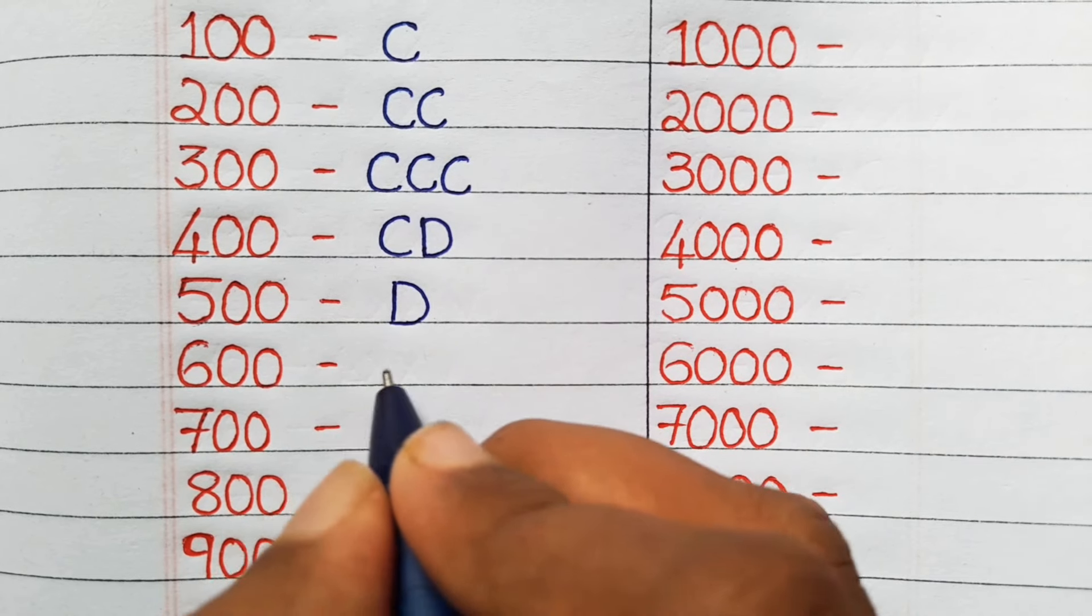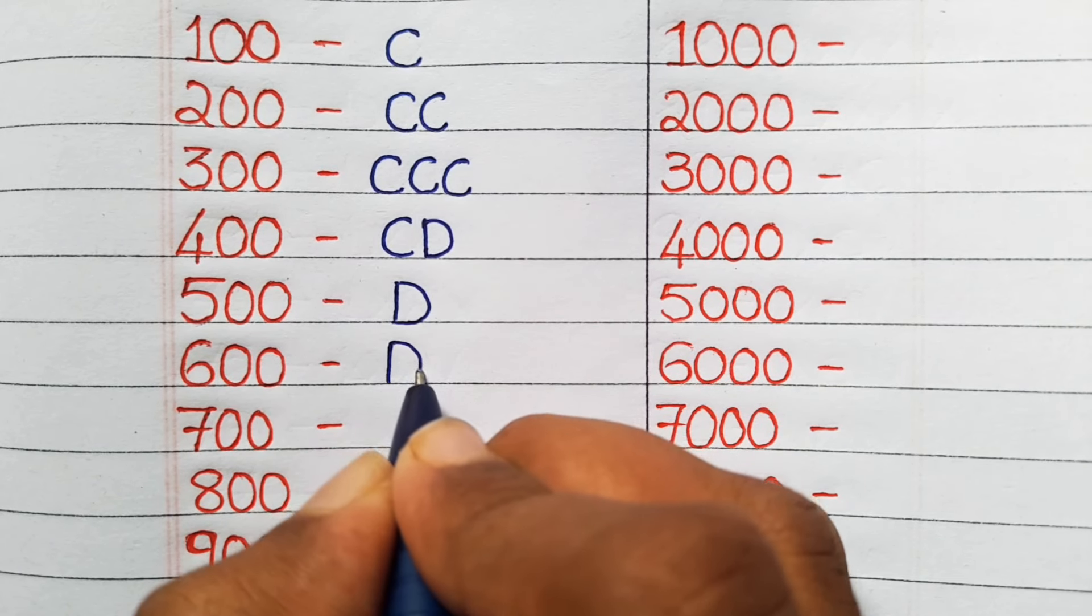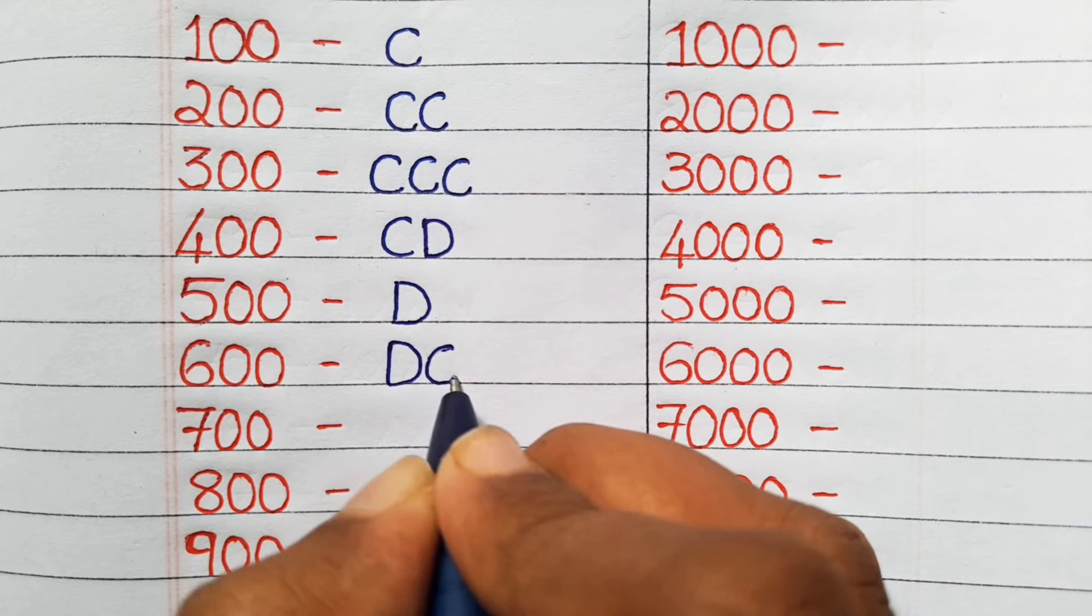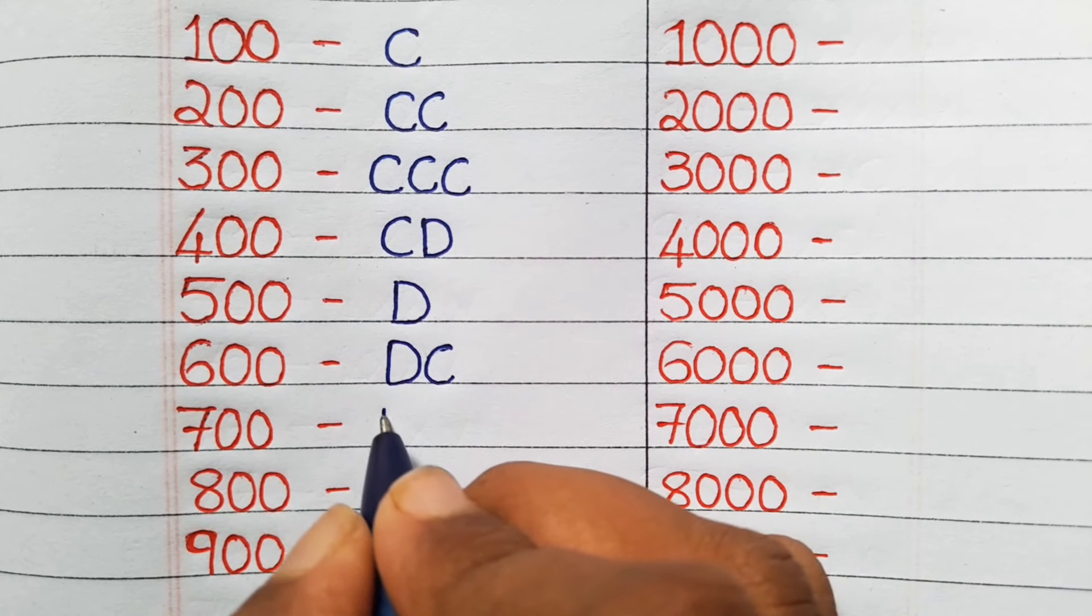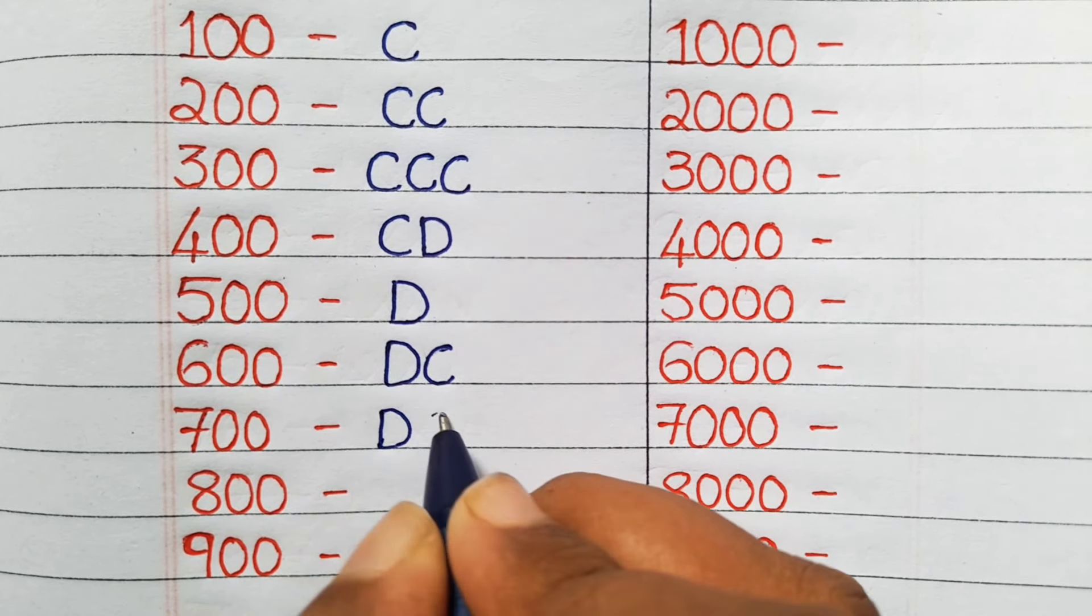Hello everyone, welcome back to my channel. Today in this video, I am going to write Roman numbers of hundreds and thousands. So let's get started. One hundred we write it as C, and two hundred we write in Roman numerals as CC.